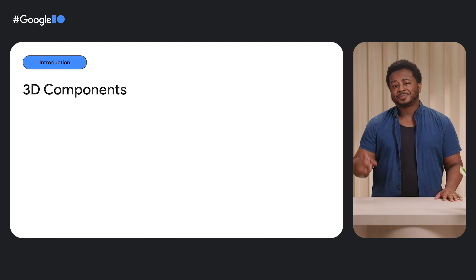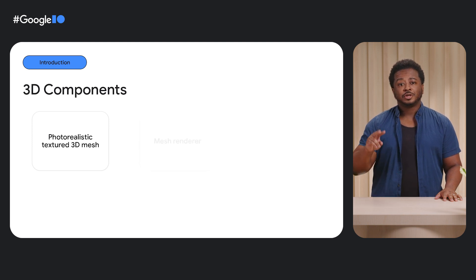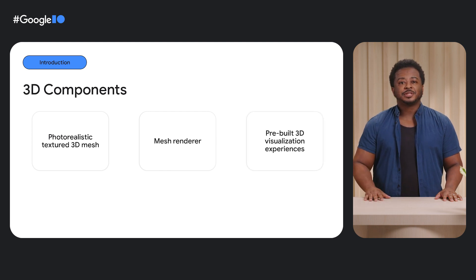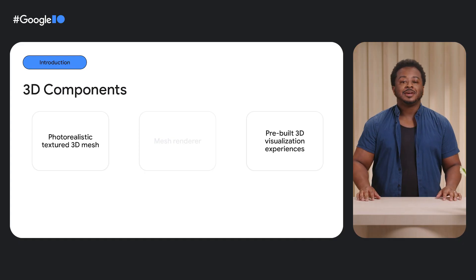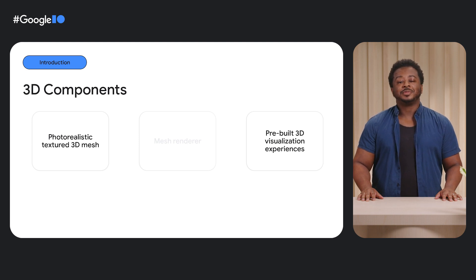Those components are: one, a photorealistic textured 3D mesh; two, a mesh renderer; and three, pre-built 3D experiences like Earth Studio. If you recall in the past I.O. talk, I casually mentioned your world isn't flat, so maybe your map shouldn't be either. Well, it's time to showcase some of those capabilities that have been in the works. Today, we are pleased to share with you two of the three components you can leverage today, with more to come in the future.